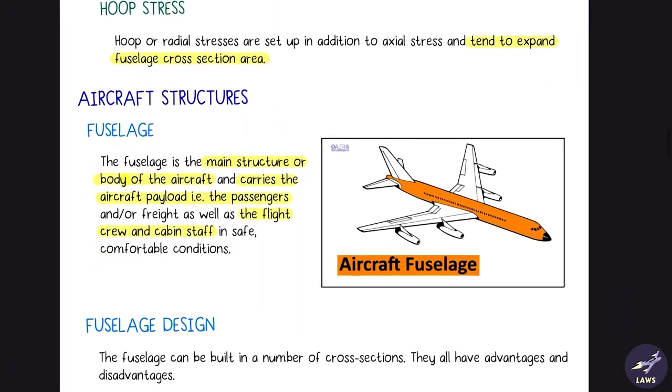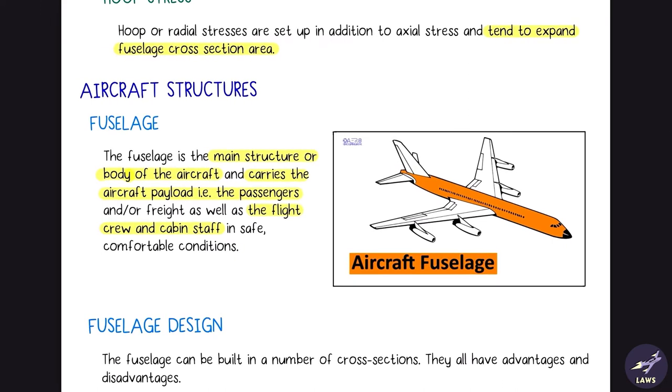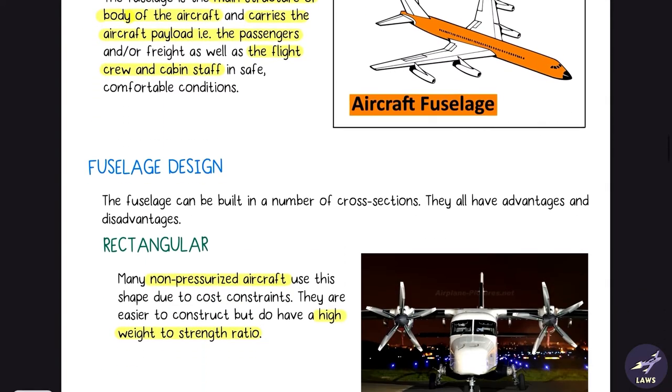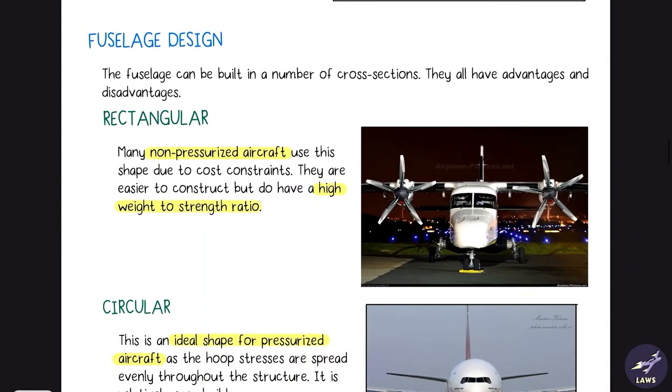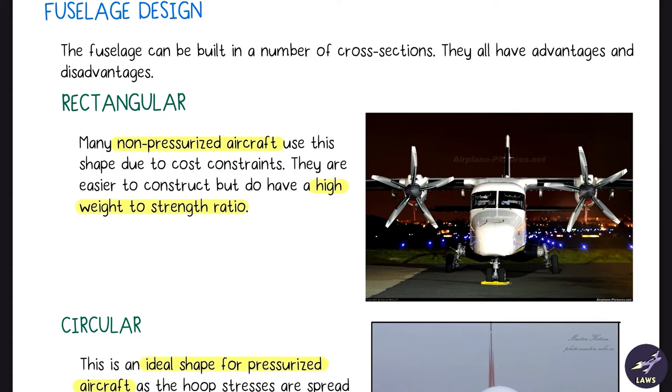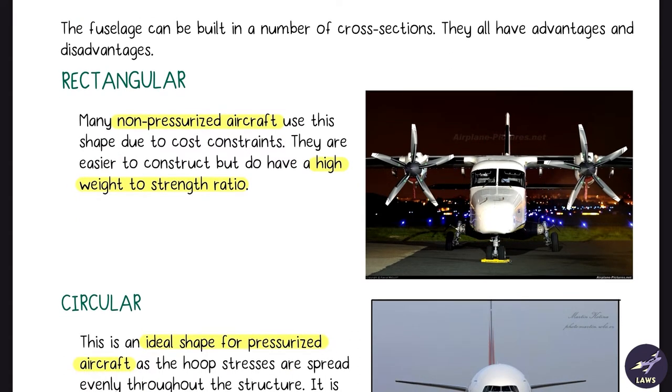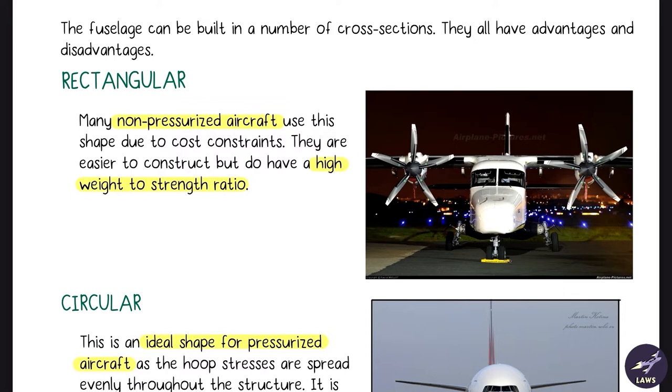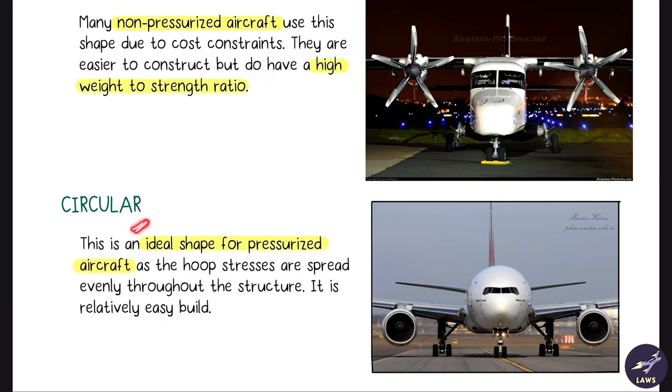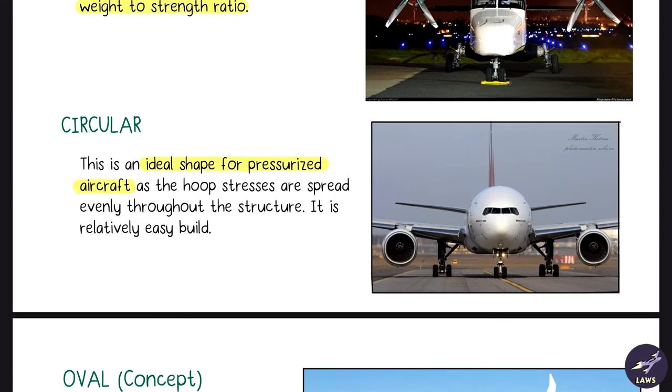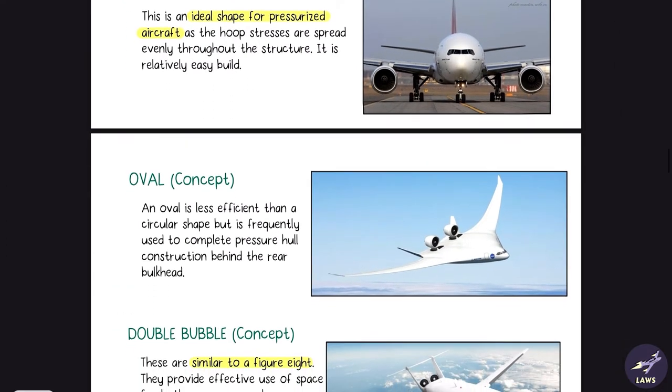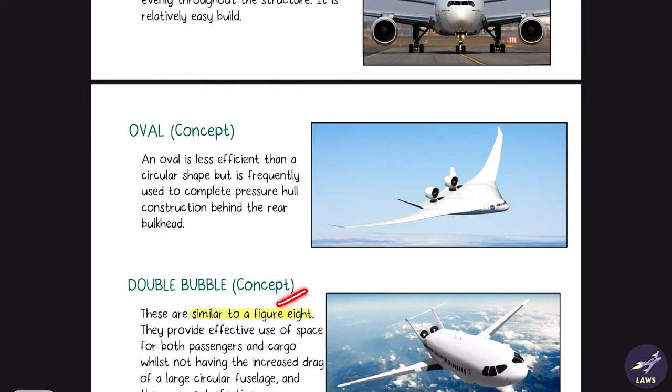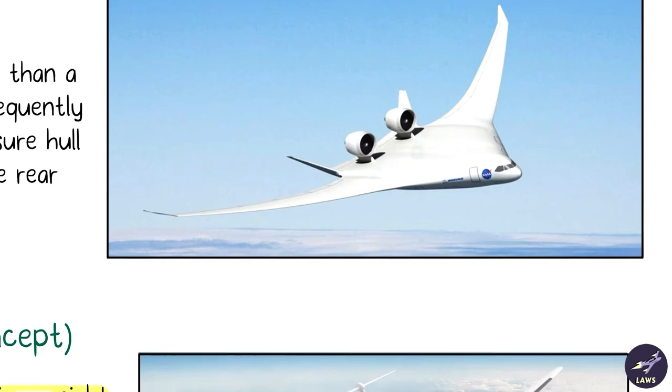Then we have aircraft structures, fuselage. Fuselage is to carry the passengers and cargo, flight crew, cabin staff. For fuselage design, many non-pressurized aircraft use rectangular design, like we have in the case of Cessnas. This design has a high weight to strength ratio, so obviously weight is more. We cannot use this in our airliners. In that case we use circular shape fuselage design, which is ideal for pressurized aircraft.